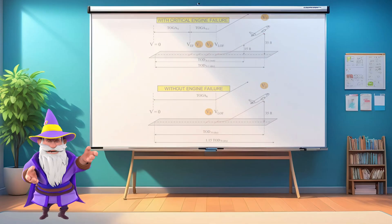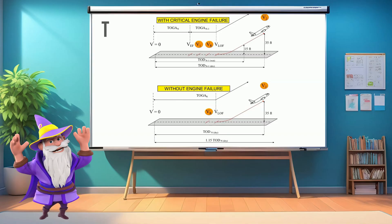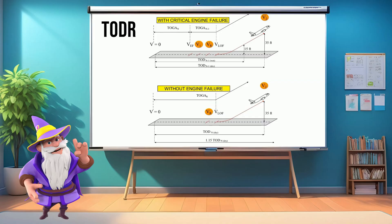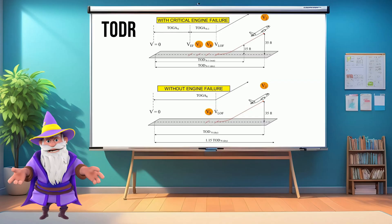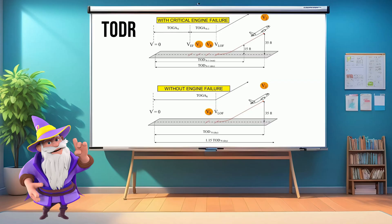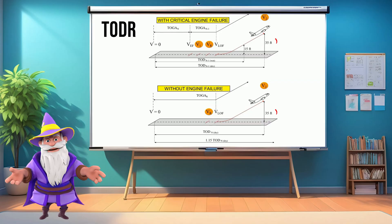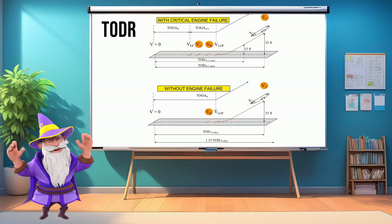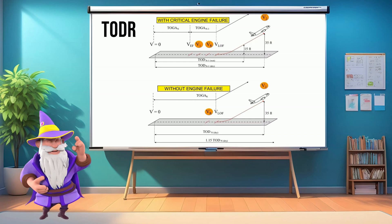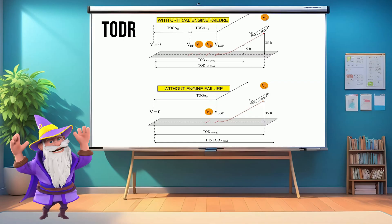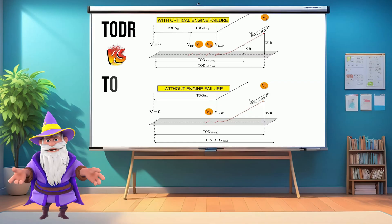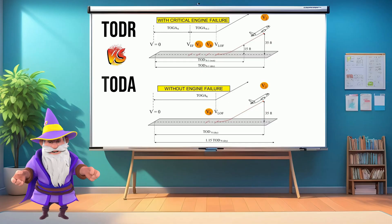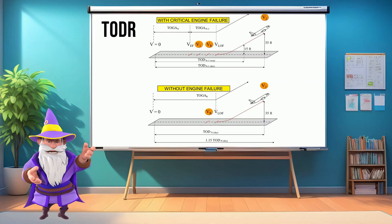Let's start with one of the most important: takeoff distance required. This is the distance from the start of the roll to the point where the aircraft reaches the screen height — 35 feet for dry runways or 15 feet for wet runways. This includes the takeoff roll plus the initial airborne segment. Takeoff distance required must be compared with takeoff distance available to ensure the aircraft has enough distance to safely take off.